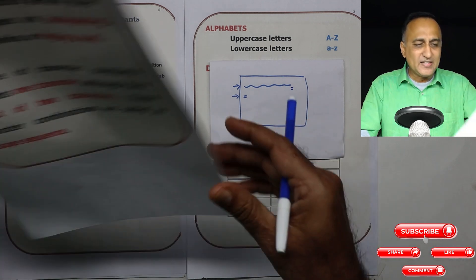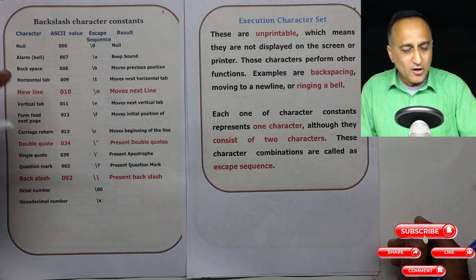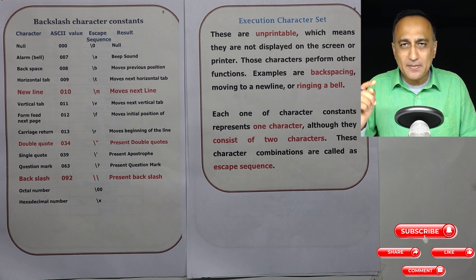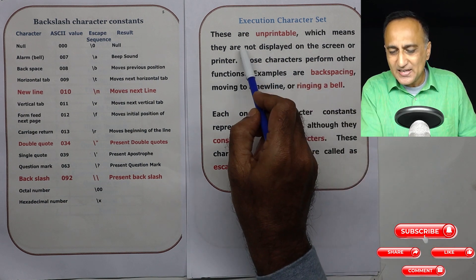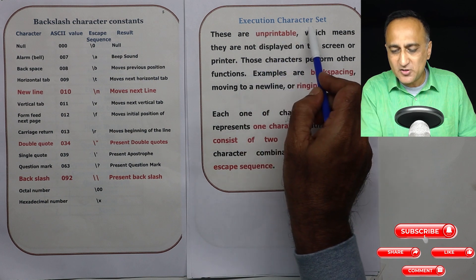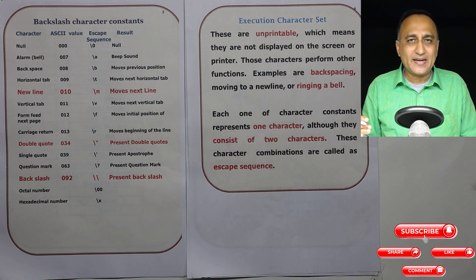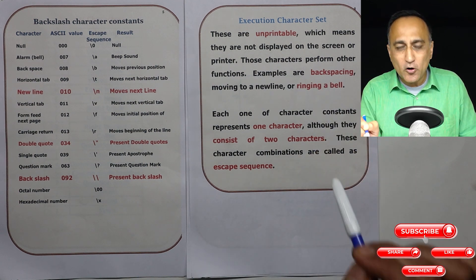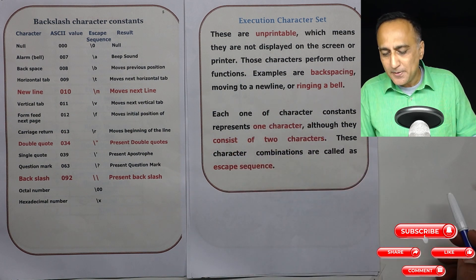In technical terminology, these are also called the execution character set. All of these characters are non-printable — meaning if you print backslash a, you cannot see it on the screen, but you will hear a beeping sound. That is why they are known as unprintable characters or execution character set. These unprintable characters are used to perform specific functions like doing an automatic backspace, moving the cursor to a new line, or creating a beep.